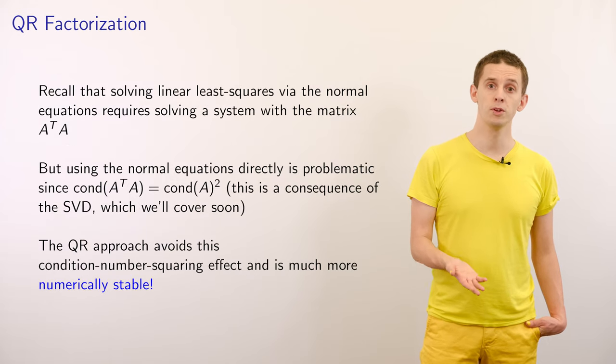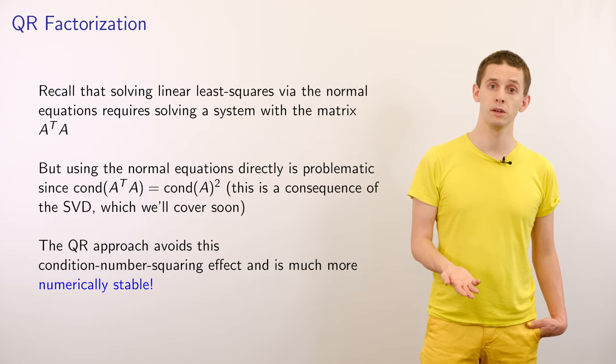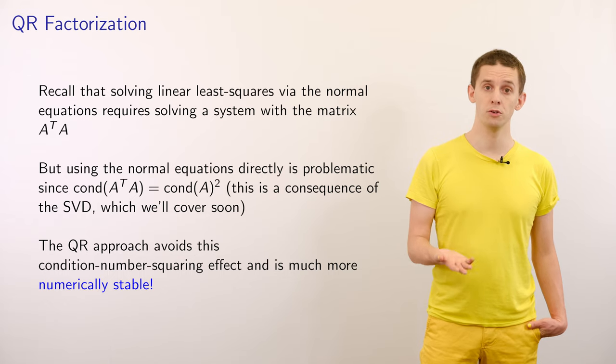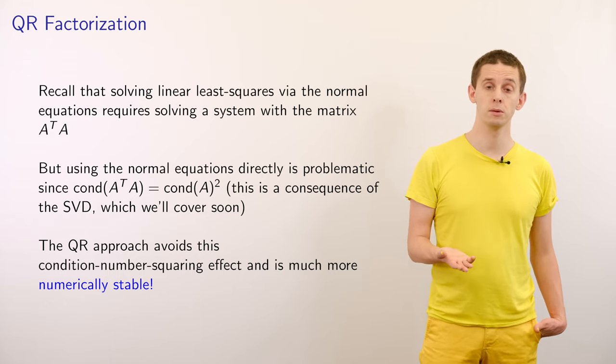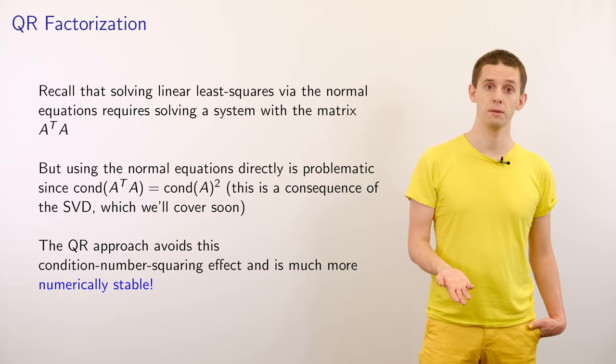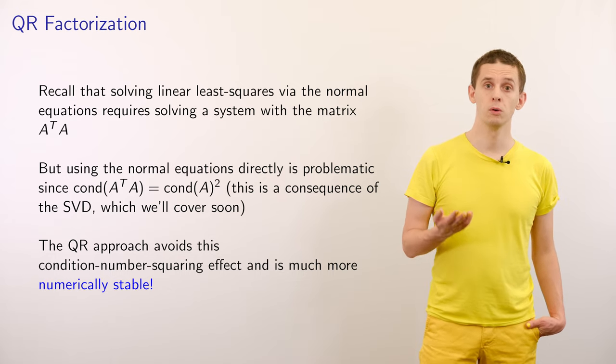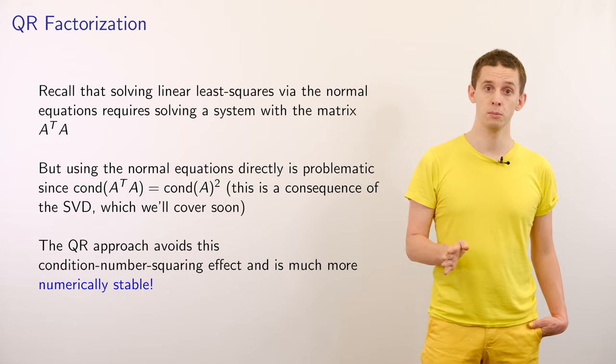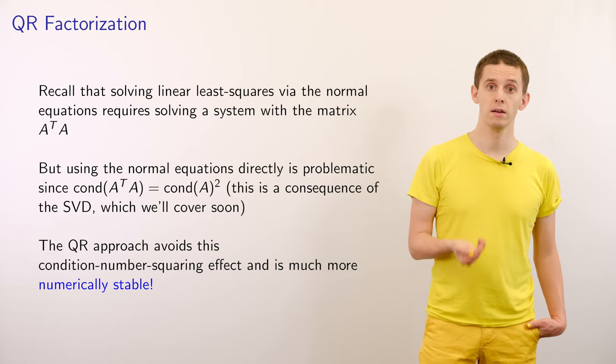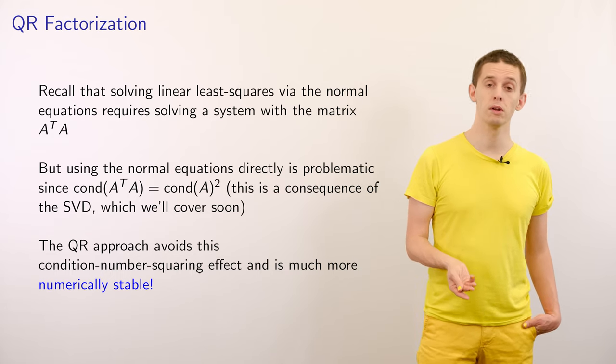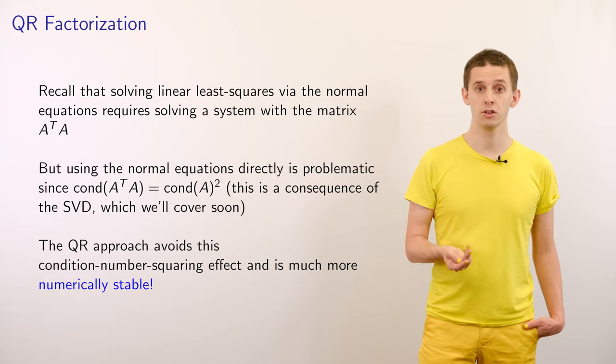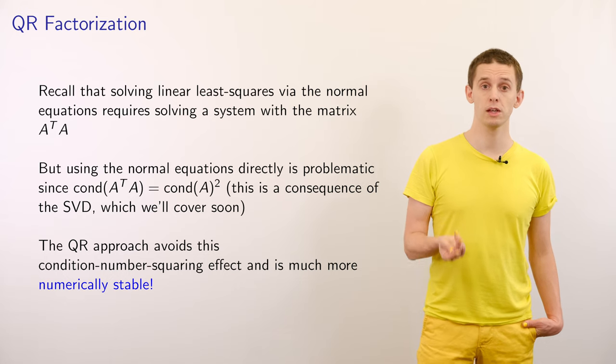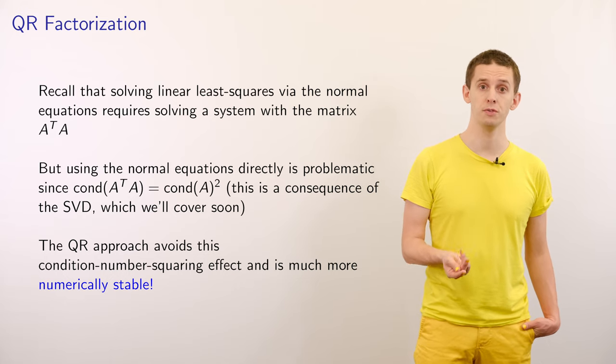Recall that when we solve linear least squares problems using the normal equations, we had to deal with this matrix A transpose A and solve linear systems that involved A transpose A. We therefore were dependent on the condition number of A transpose A, and this can be shown to be equal to the condition number of A squared. We'll actually see this a little later on in this unit when we come to look at the singular value decomposition, the SVD.